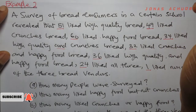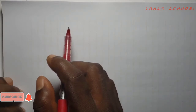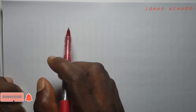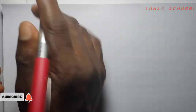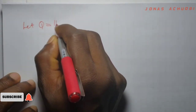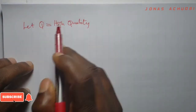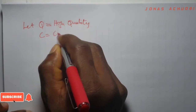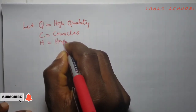Like we did in example one, the first step is to carefully bring out all the parameters given in the problem. There are three sets of students here: the set of those who love high quality, the set of those who love crunches bread, and the set of those who love happy food bread, and of course there's someone who loves none of them. So let Q be the set of those that liked high quality bread, let C represent the set of those that liked crunches bread, and let H represent the set of those that liked happy food.